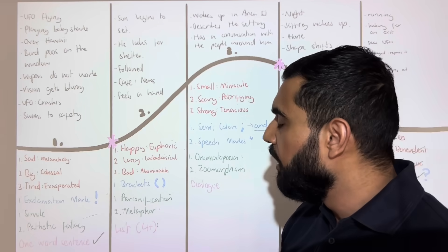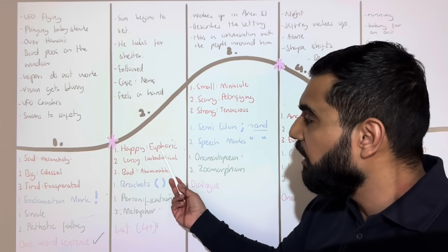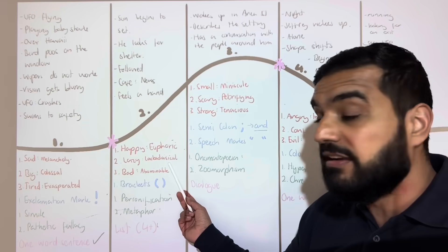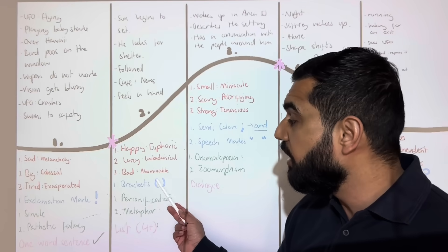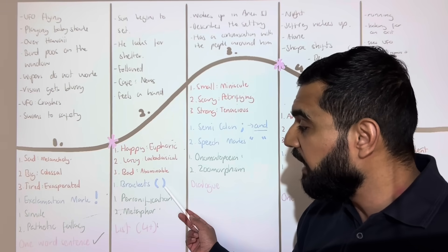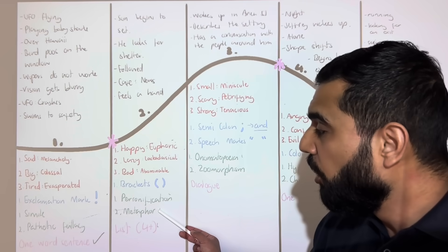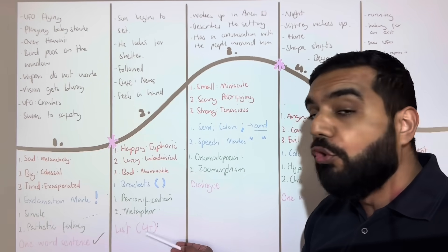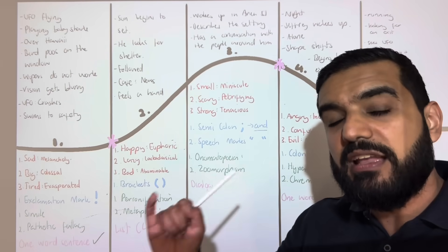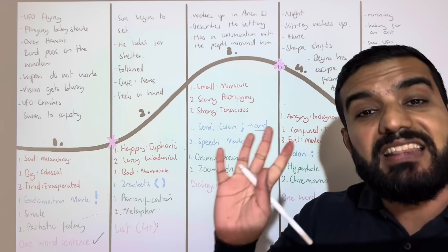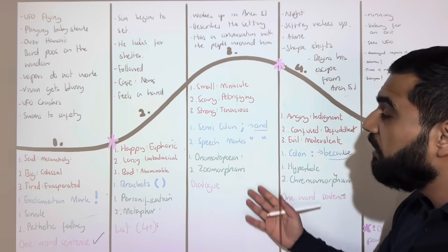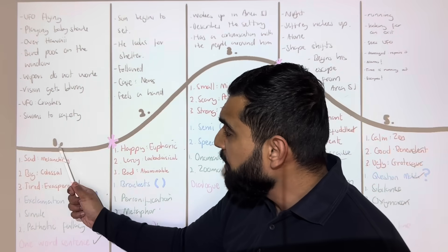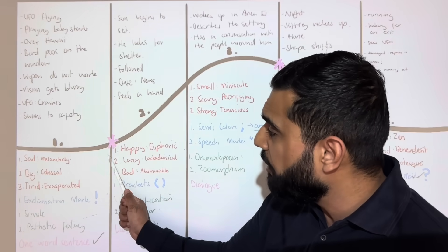Paragraph two: rather than 'happy' use 'euphoric', rather than 'lazy' use 'lackadaisical', rather than 'bad' use 'abominable'. Use brackets, personification, a metaphor, and a list — a list is four or more items, for example: eggs, milk, bread, chocolate. That counts as a list.